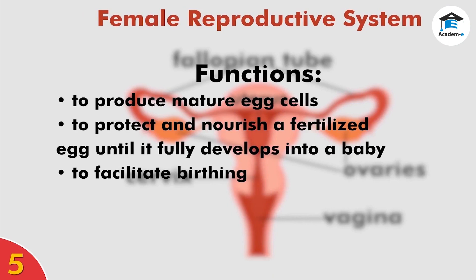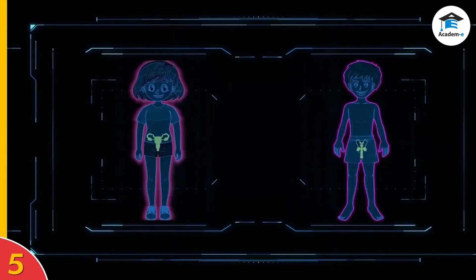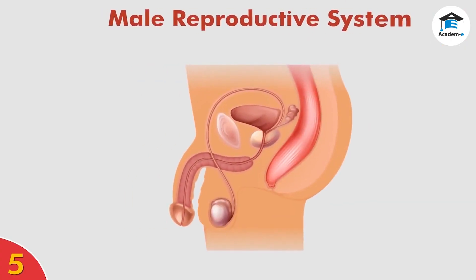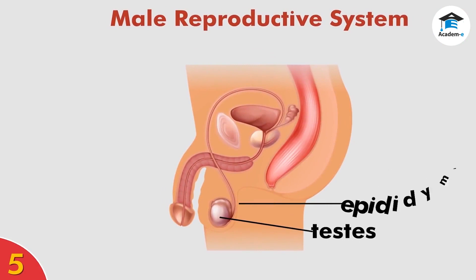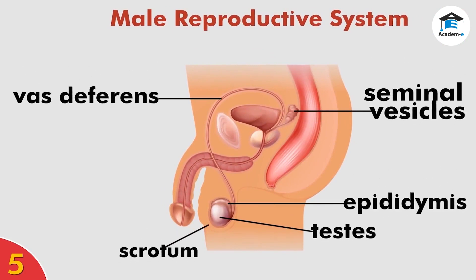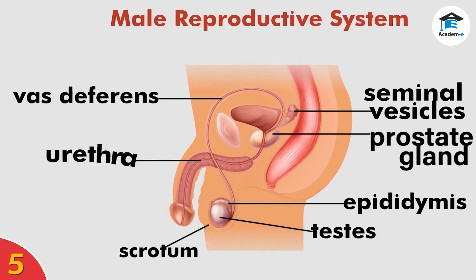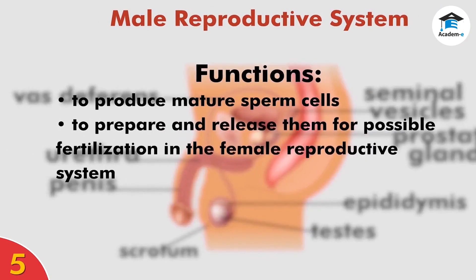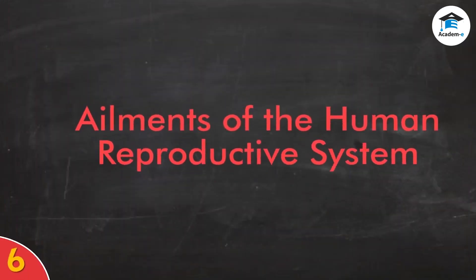The male reproductive system comprises the testes, epididymis, scrotum, vas deferens, seminal vesicles, prostate gland, urethra, and penis. They work together as a body system to produce mature sperm cells and to prepare and release them for possible fertilization in the female reproductive system. Now let us go over some ailments of the human reproductive system.